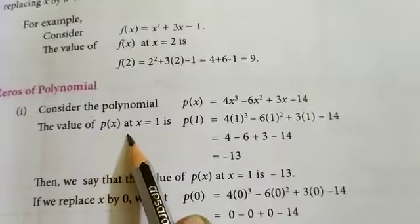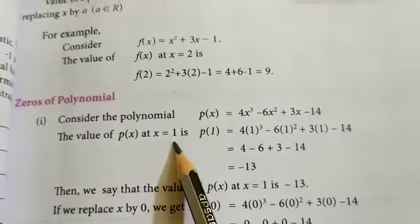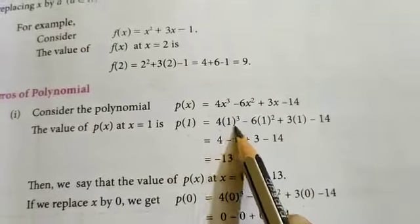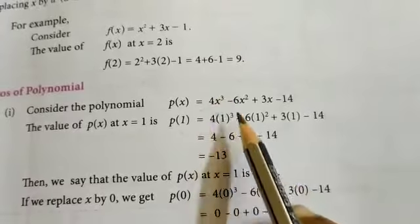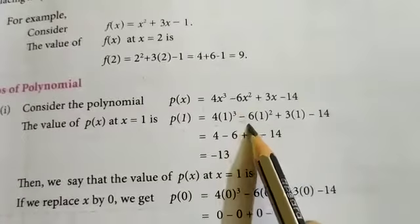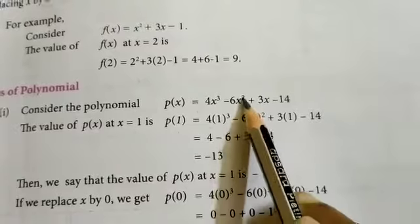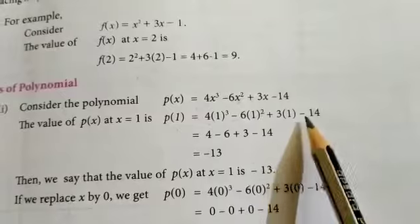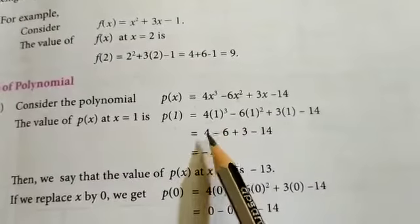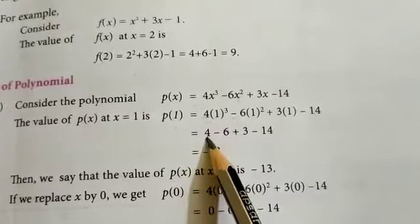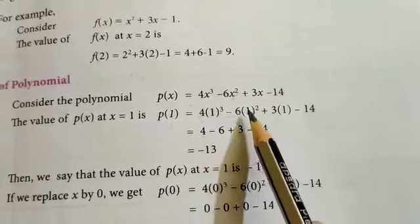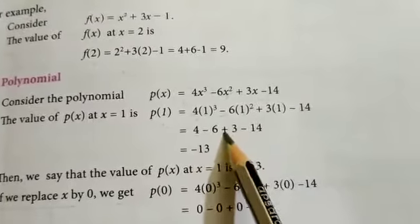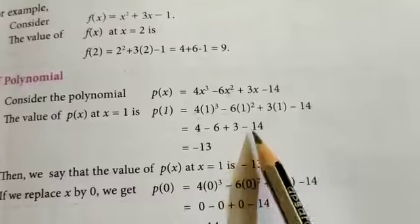The value of p of x at x equal to 1 is: p of 1 equal to 4 into 1 whole power cube minus 6 into 1 whole power square plus 3 into 1 minus 14. So 1 cube means 1, 1 into 4 is 4. Next, 1 square means 1, so 1 into 6 is 6, minus 6 plus 3 ones are 3 minus 14.